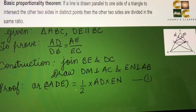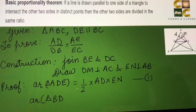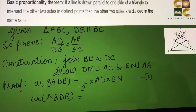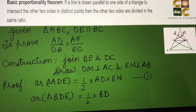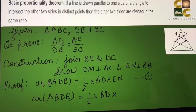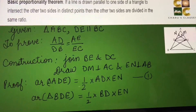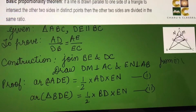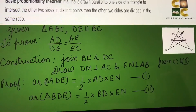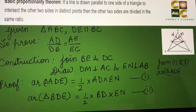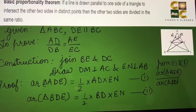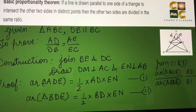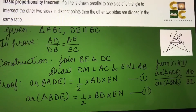Now, area of triangle BDE is also half base into height. For triangle BDE the base is BD, and the perpendicular — which is outside the triangle — is EN. So area of triangle BDE = (1/2) × BD × EN. This is equation 2. Dividing equation 1 by equation 2, the halves and EN cancel, leaving area of △ADE / area of △BDE = AD/BD. This is equation 3.